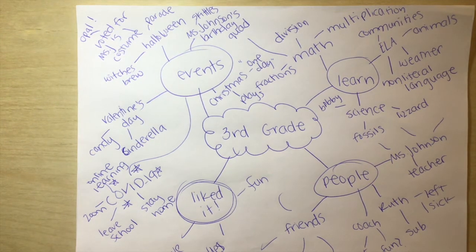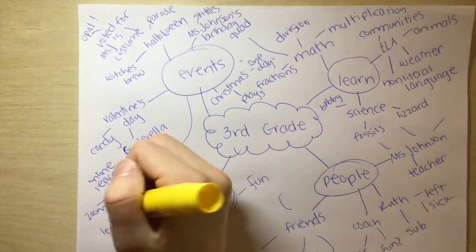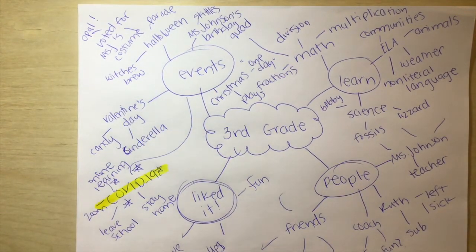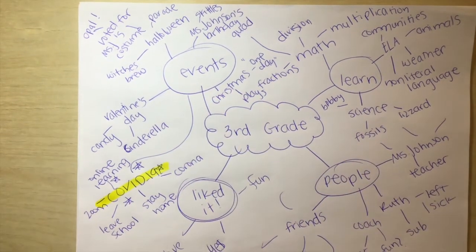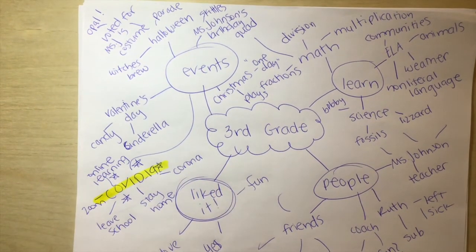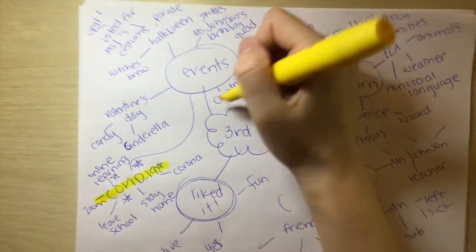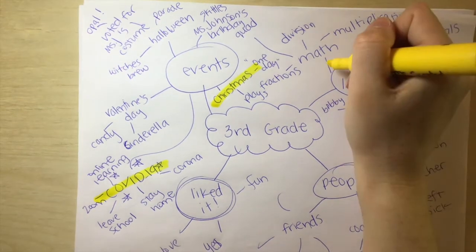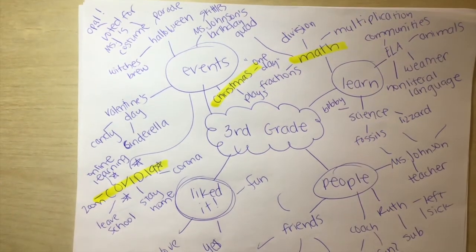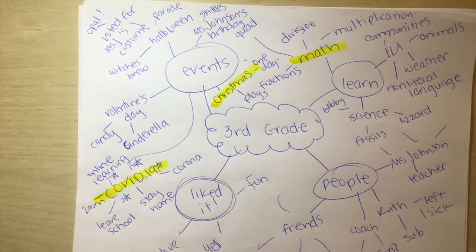So now what I want you to do is choose three things that you want to write about. I'm going to tell you right now, I think everybody should write about COVID-19, coronavirus. Okay. This is corona. So either highlight, circle, underline three things. I'm going to do coronavirus. And then I'm going to do Christmas because Christmas is really fun. And then I think I'm going to do math because I think math is super important. So highlight the three things that you want to talk about.